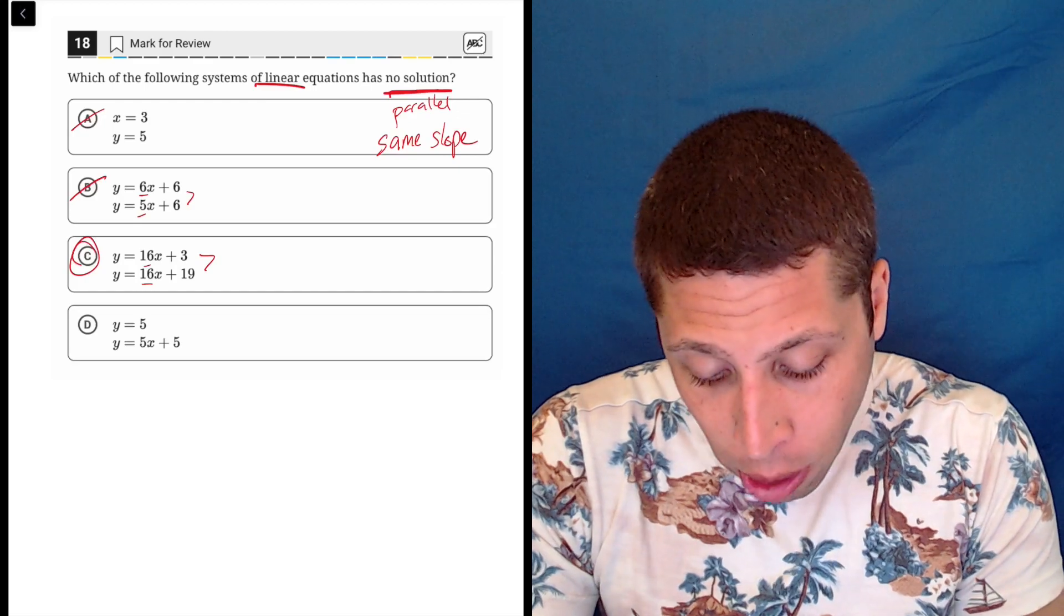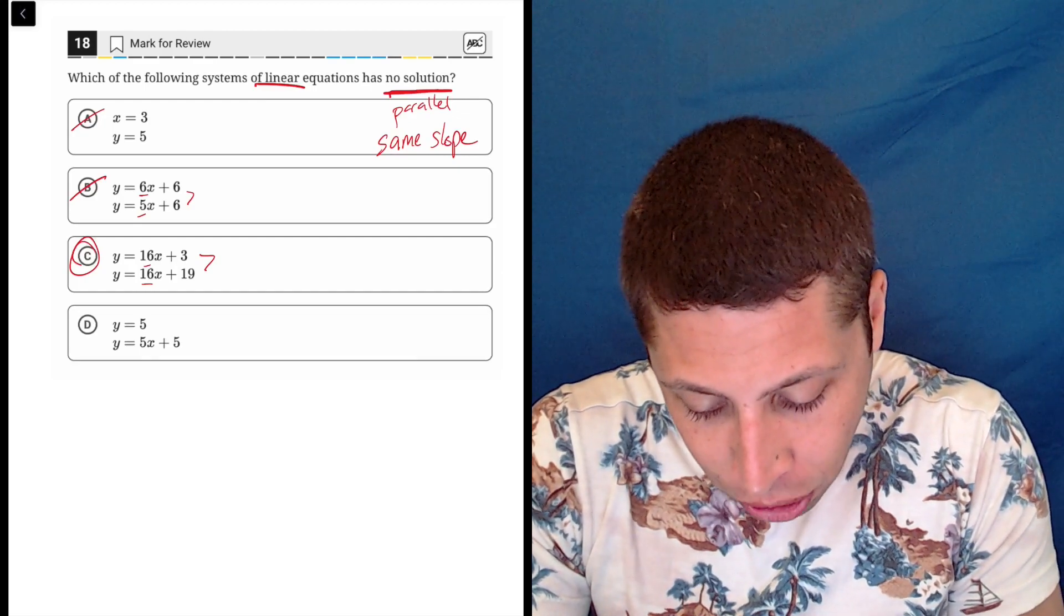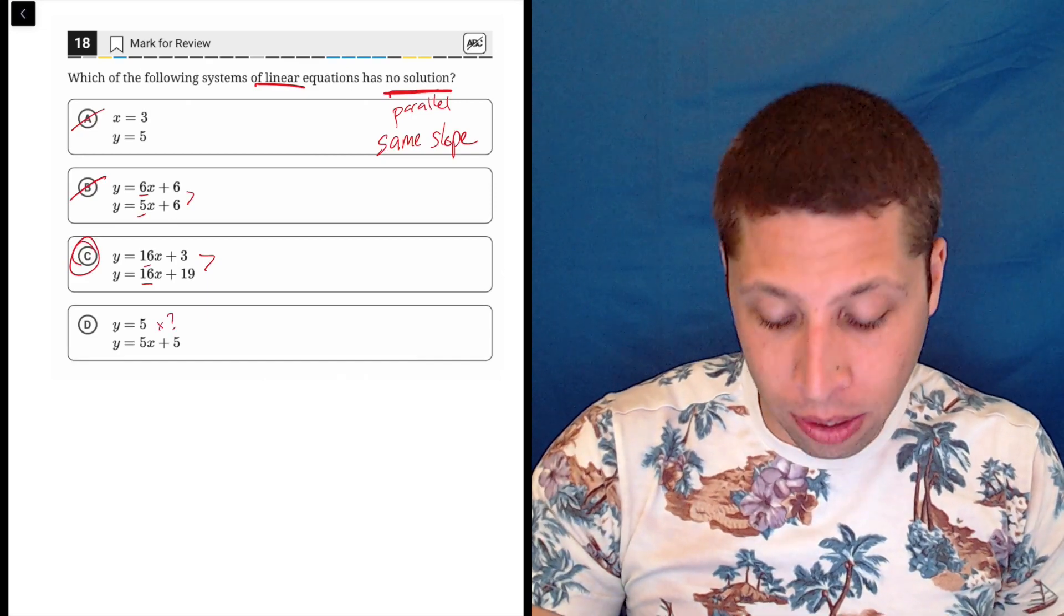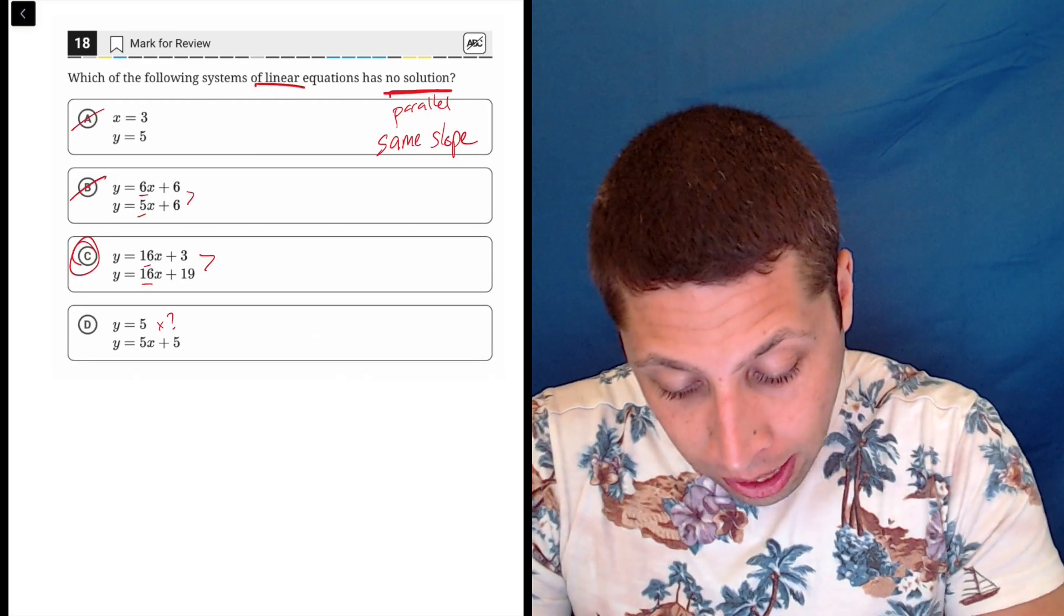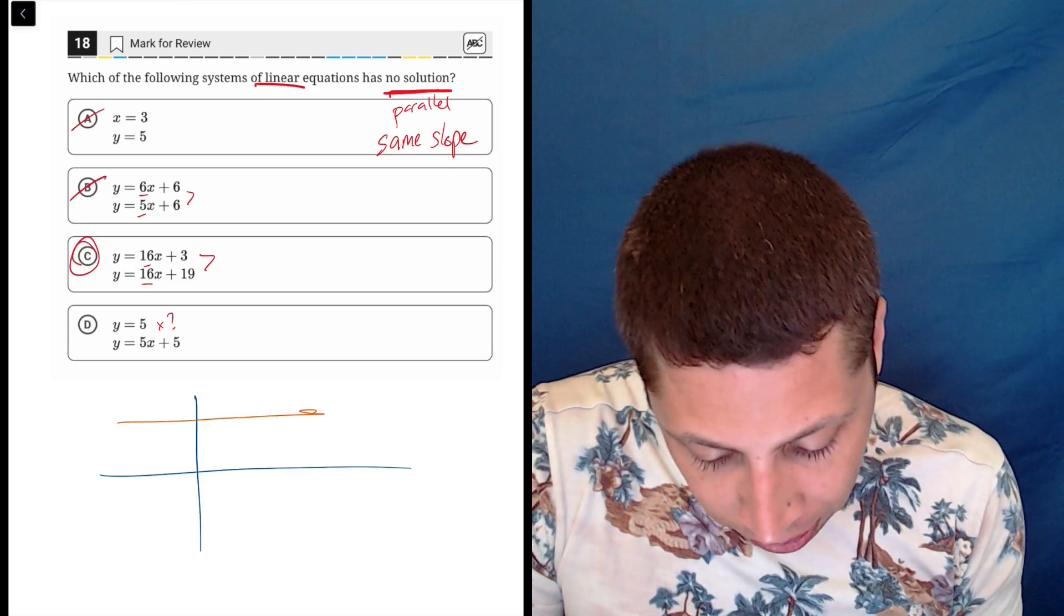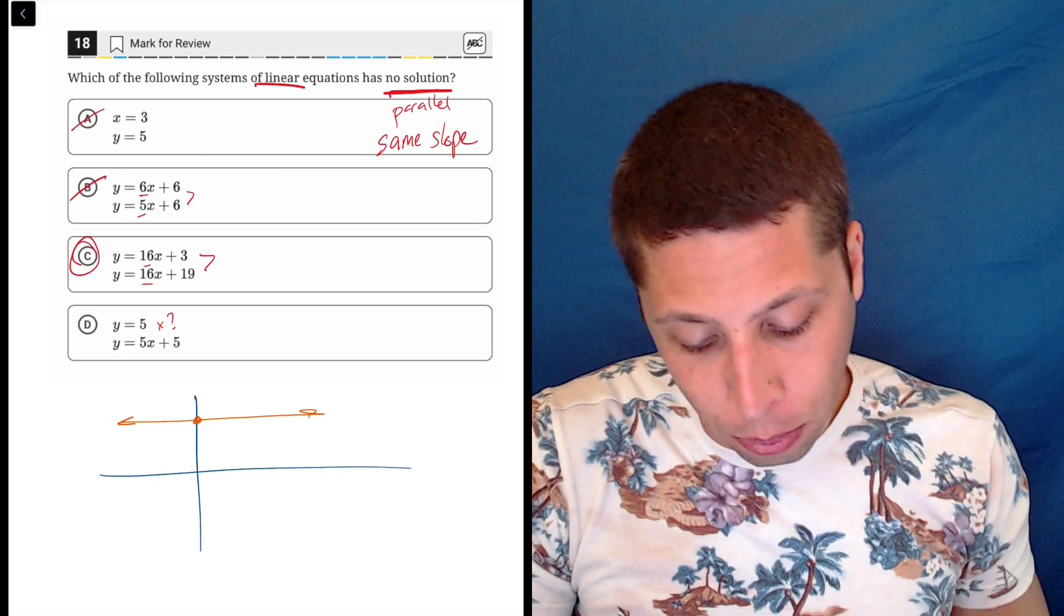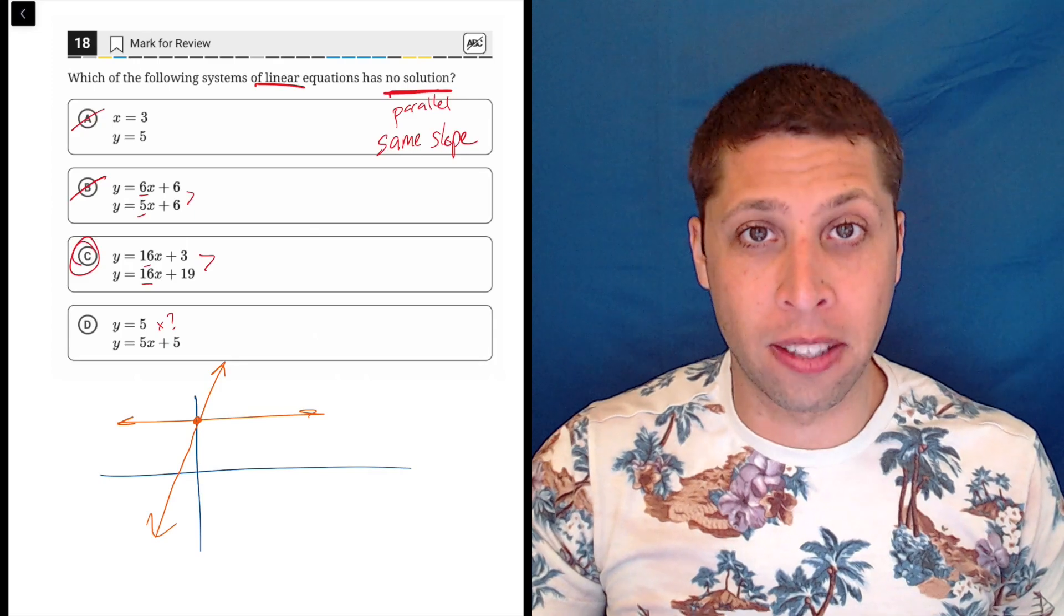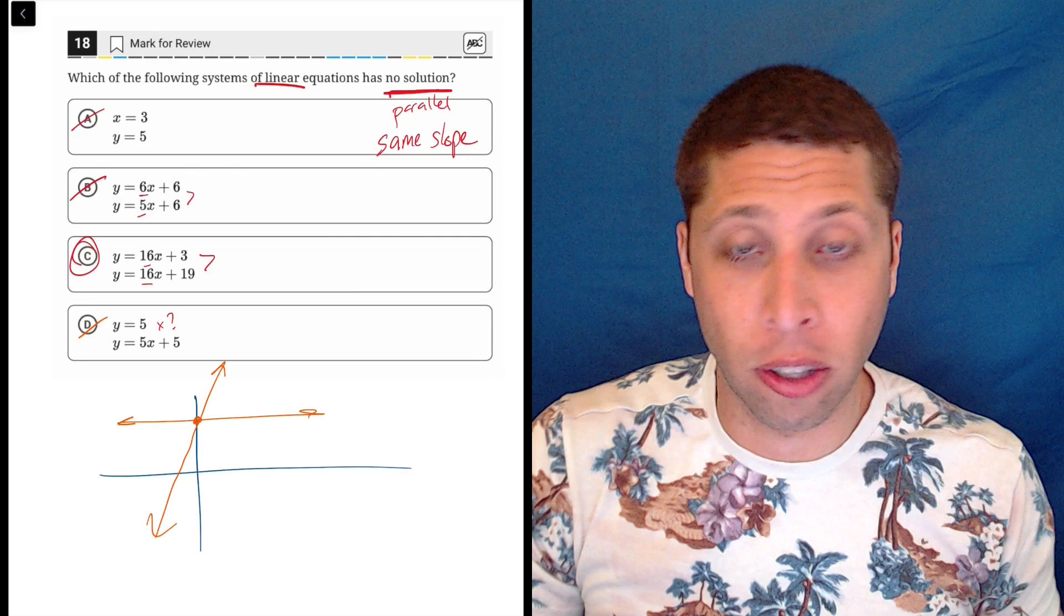Choice D is not the same slope. It looks like it because those 5s are lined up, but that's not a slope - there's no x term attached to that. So that y equals 5 is really just saying that the y-intercept is 5. We'd have y equals 5 as a horizontal line up here, and then y equals 5x plus 5 is going to intersect at that point and go up. There's nothing special about this system - it's just one intersection, which is the case for most lines.